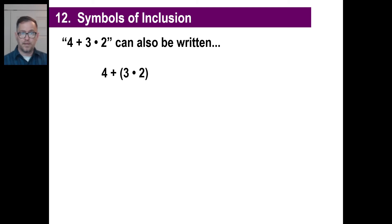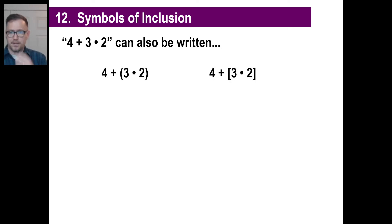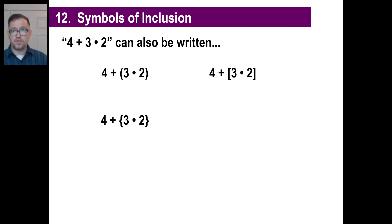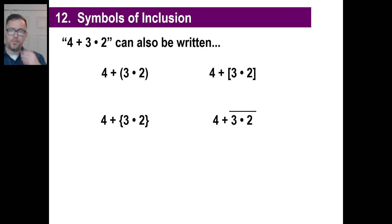This can also be written with parentheses. Symbols of inclusion means you're clumping stuff together really clearly. You can also write it with brackets, or with fancy-looking curly brackets. A lot of times they'll take turns on these so you don't get an equation that looks like 68 sets of the same shape bracket.